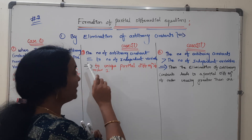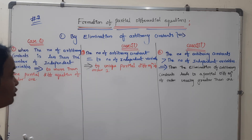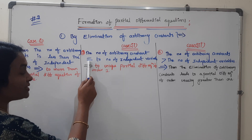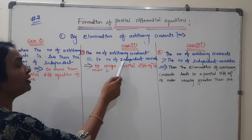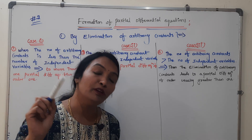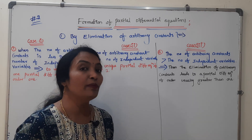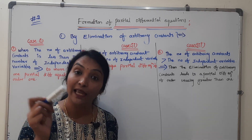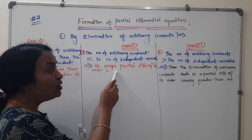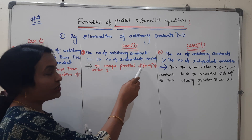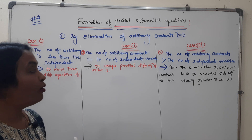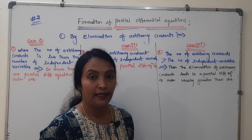The second case: the number of arbitrary constants is equal to the number of independent variables. This gives a unique partial differential equation of order 1.